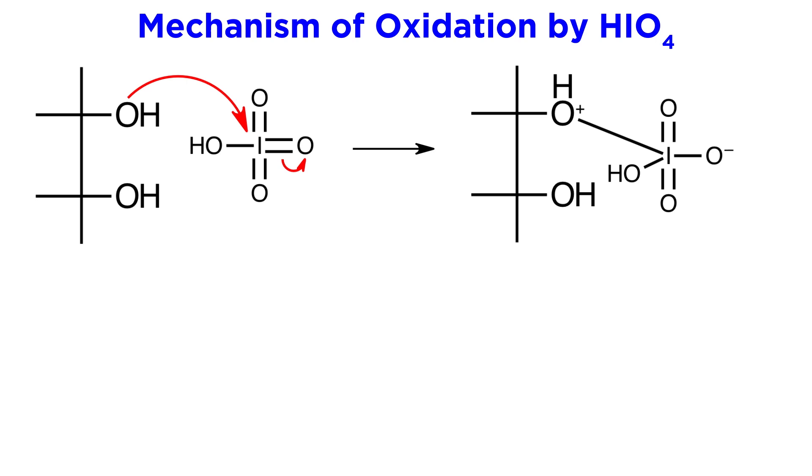A hydroxyl can therefore attack and coordinate to it, kicking one of these pi bonds up onto the oxygen. We can also indirectly transfer the remaining hydroxyl proton over to the oxyanion just to get these oxygens neutralized. Then we can do the same thing with the other hydroxyl, attack, kick this pi bond up, and shuffle the protons.